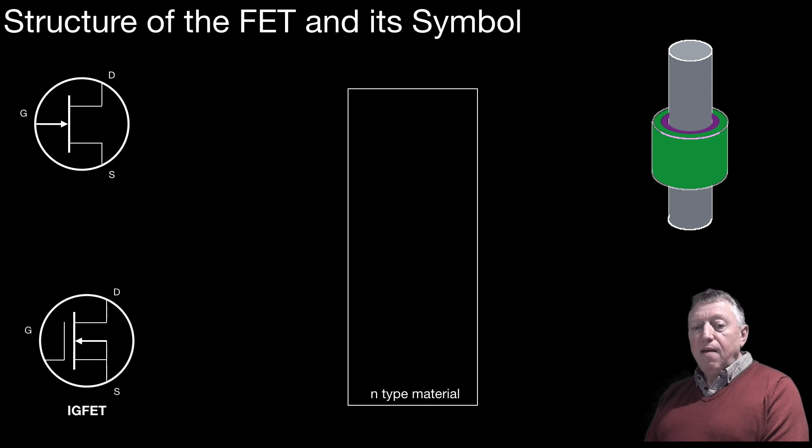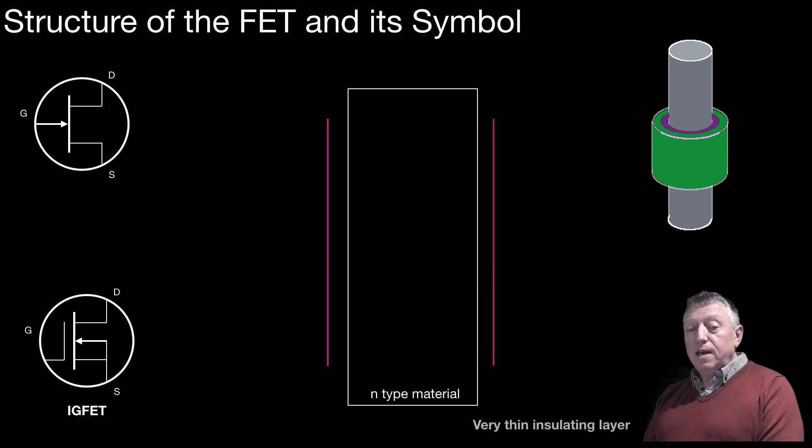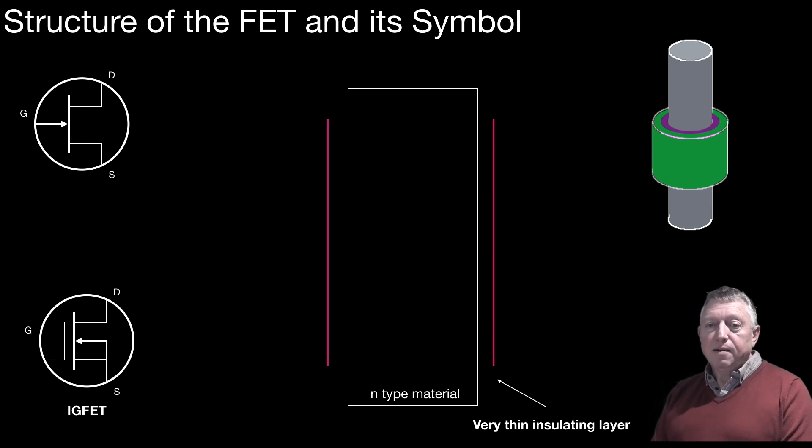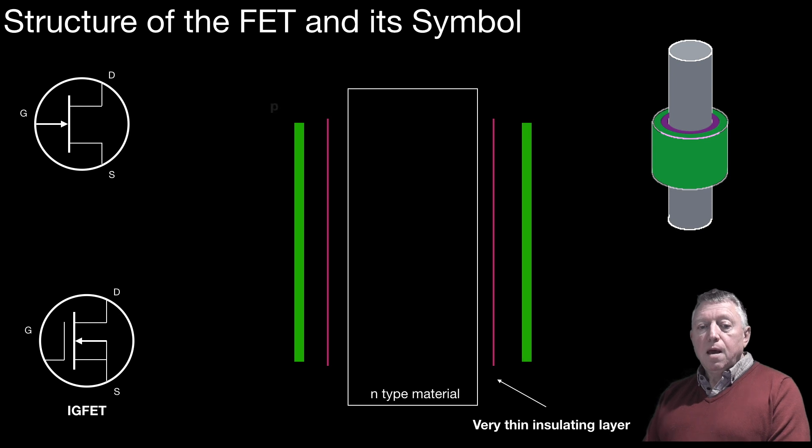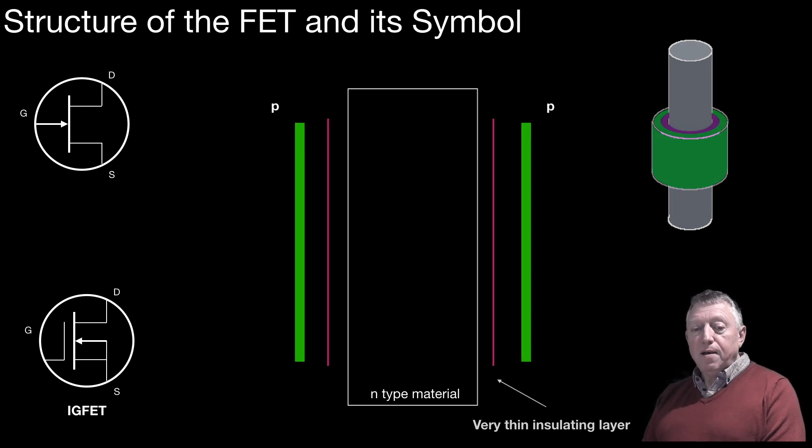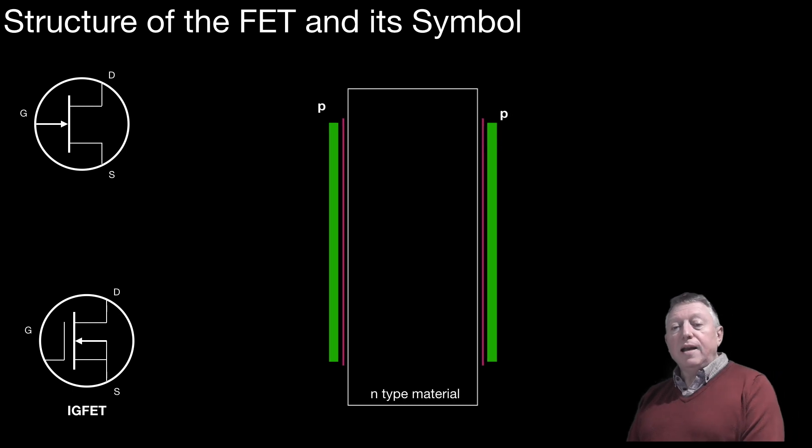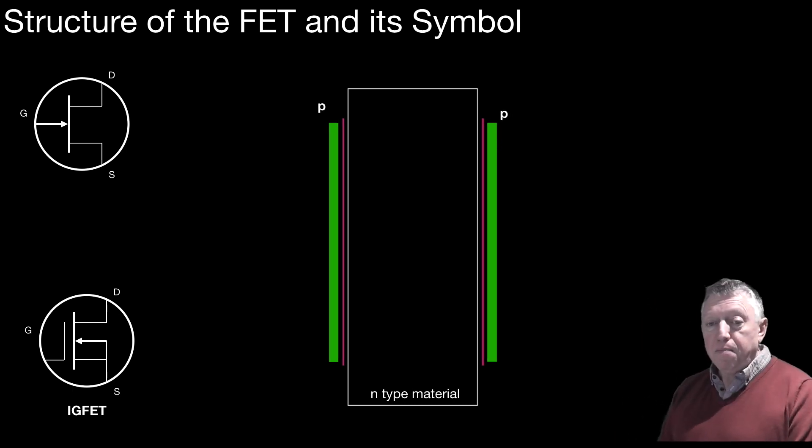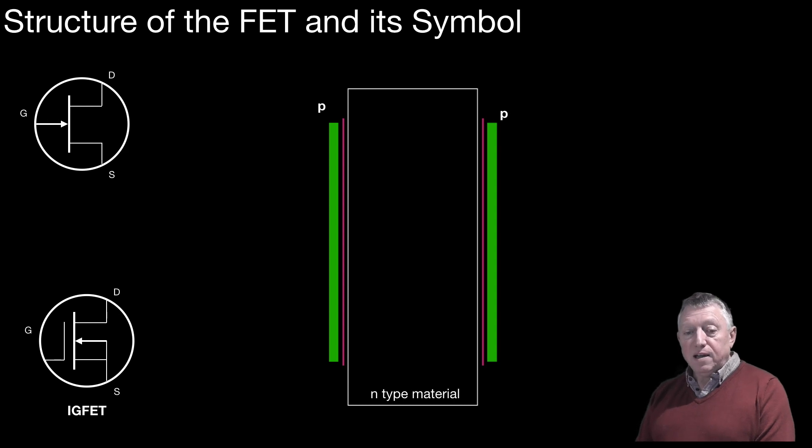And if it were an IGFET, there's a symbol there and we would have around the N-type material some insulating material. This is very useful as IGFETs can then have very high impedance, but we'll come on to that in a minute. So there's the P-type material forming the outer cylinder and that's sandwiched then onto the N-type material. So there is the FET.